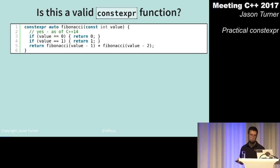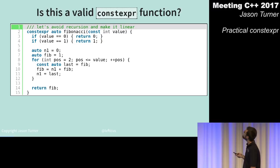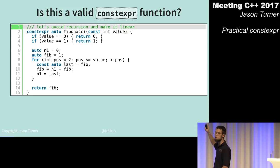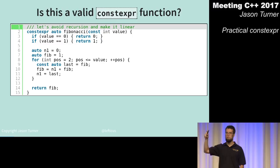We've decided to make this a linear calculation of Fibonacci because we don't like recursion. Is this still valid as a constexpr function? Yes — C++14, this is fine.